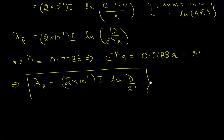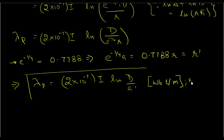The units are Weber-turns per meter, and r prime equals 0.7788 r.